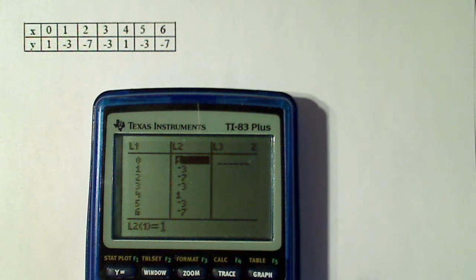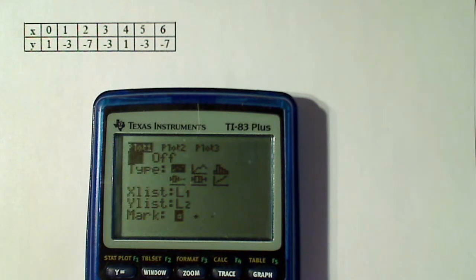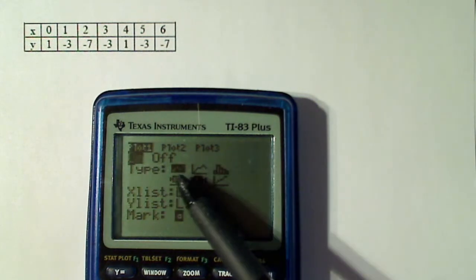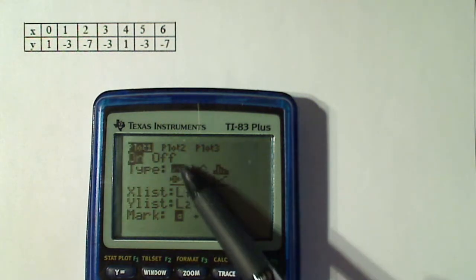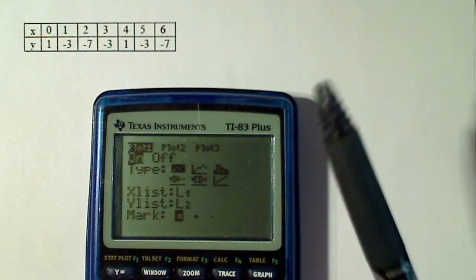Now in order to plot the data, I have to go to stat plot, hit number one and make sure it's turned on. And I'm going to do the scatter plot, which is this first one, make sure this is list one and list two, and it doesn't really matter what mark you put on there.